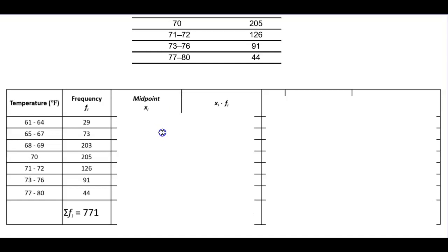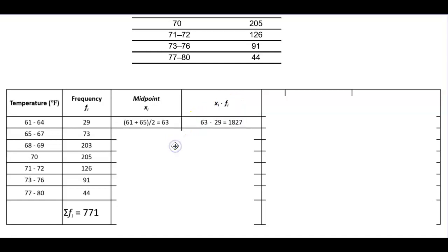Now we're going to create two columns to approximate the mean. The first column is for the midpoint, and the next column is the midpoint multiplied by its frequency. To find the midpoint, we take the two consecutive lower class limits: 61 and 65. So 61 plus 65 divided by 2 gives us 63. We then multiply 63 by the frequency of 29 to get 1827. The next midpoint is between 65 and 68: 65 plus 68 divided by 2 gives us 66.5. Multiplying 66.5 by the frequency of 73 gives us 4854.5.